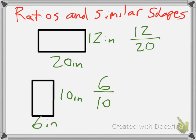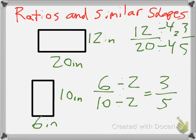Following my rules of simplifying fractions or simplifying ratios, if I get both of these in their simplest form, I'm going to divide by 2 for my bottom one and I end up with 3/5. On this one I can divide by 4 and I end up with 3/5.